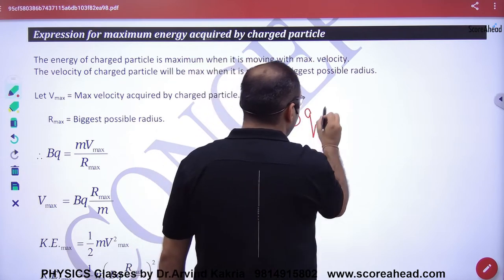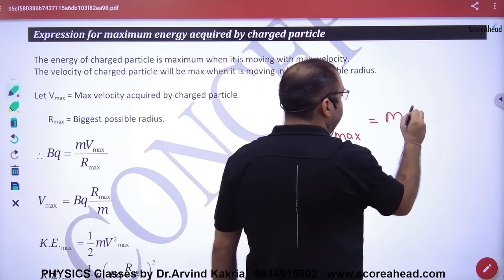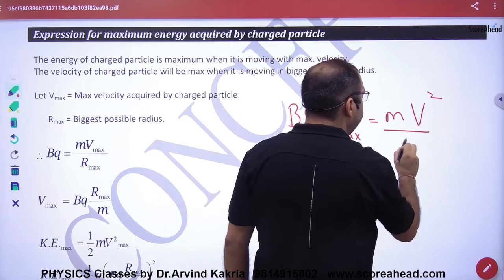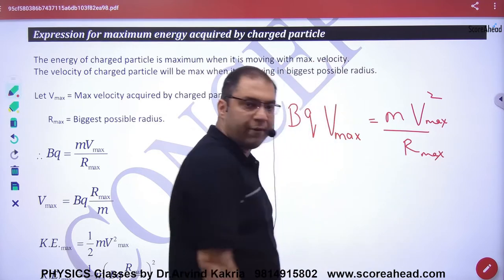That Bq will be in the last round. Maximum is mv²/r. Now r will be max and velocity will be max.